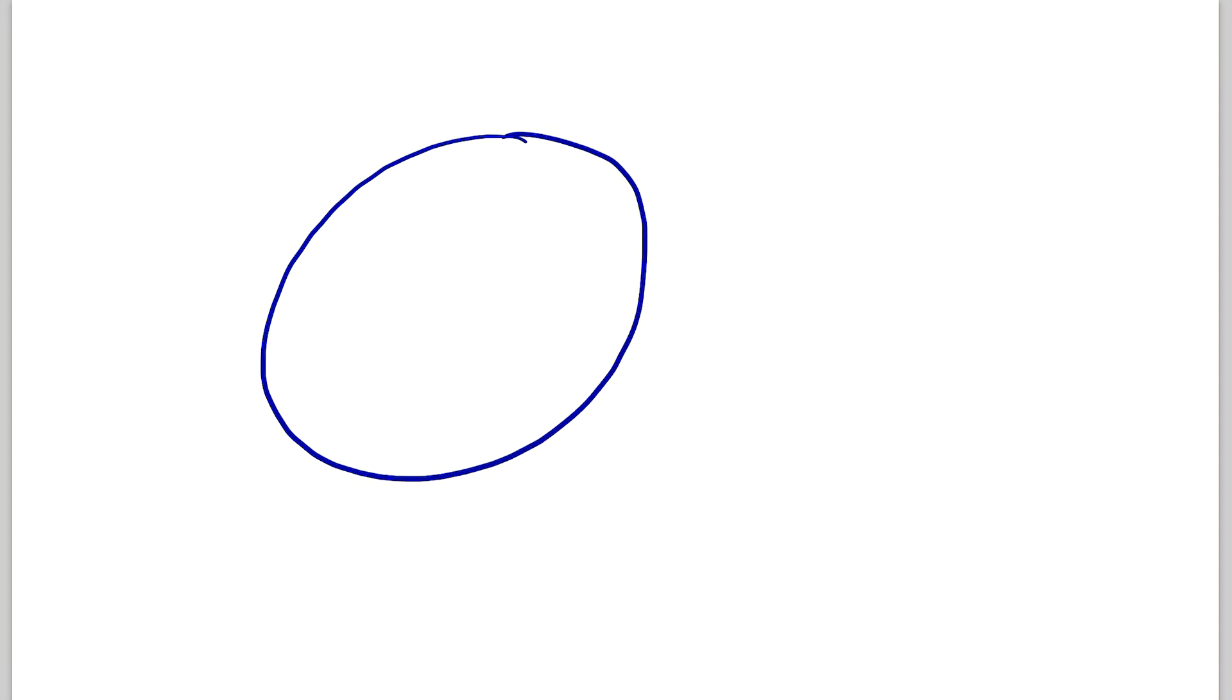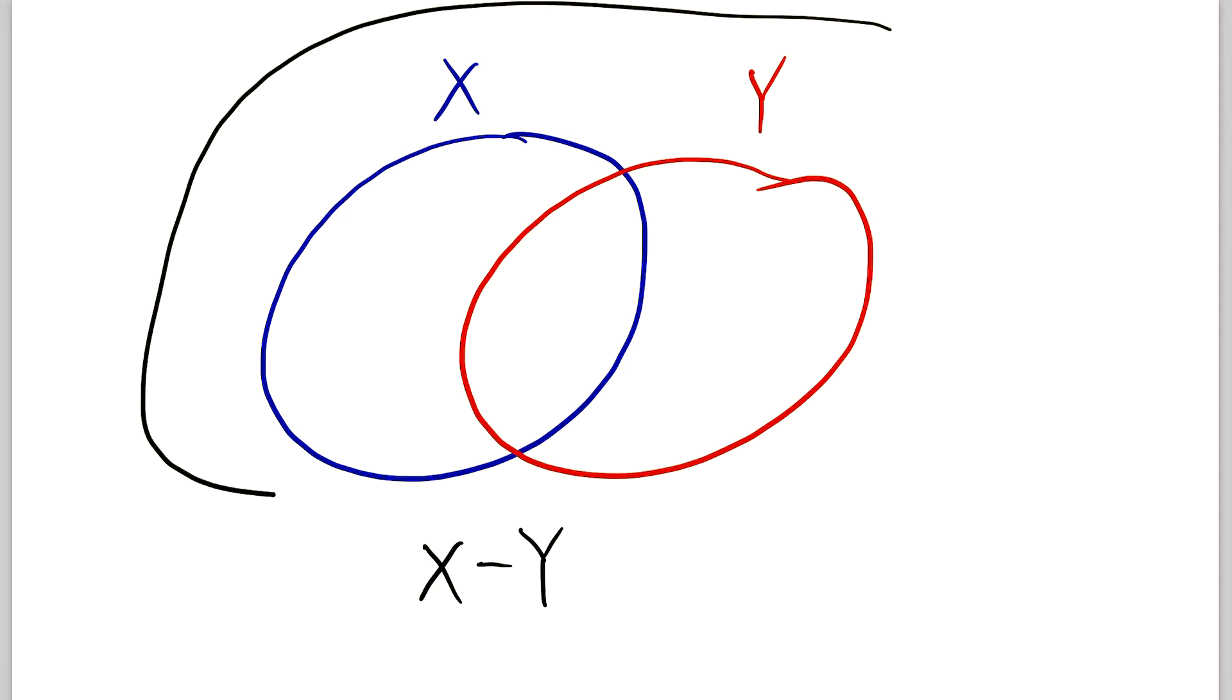So let's start off with a blue circle. This is the set X and a red circle that represents the set Y. And we want to shade X minus Y. So where are the elements of X minus Y in this diagram?